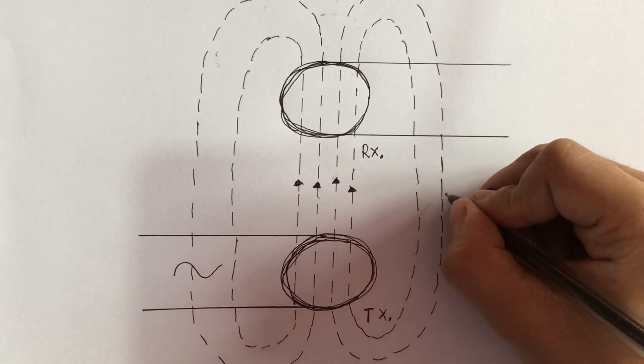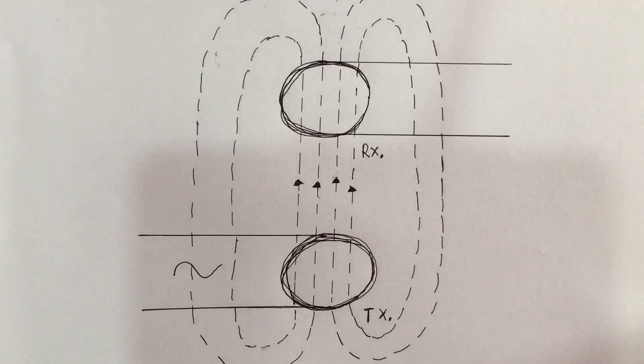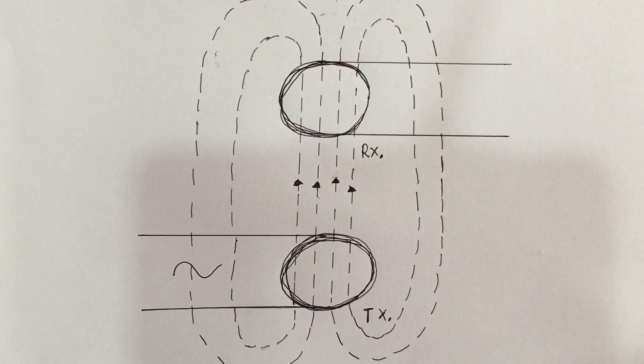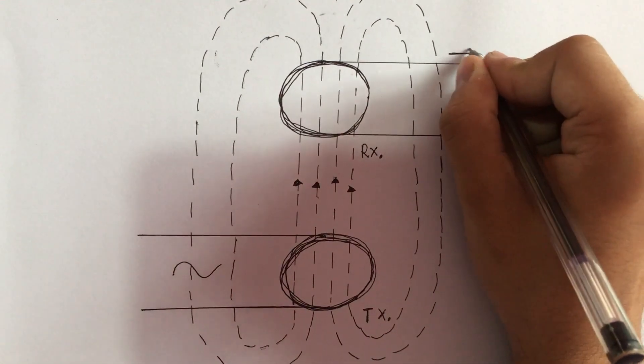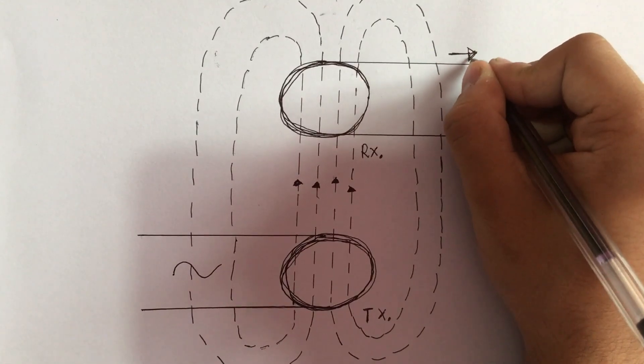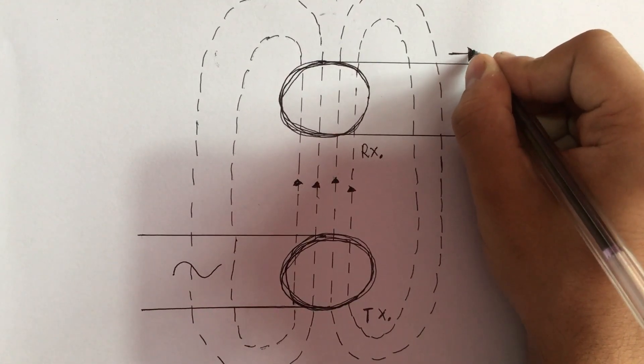The alternating current creates an alternating magnetic field around its coil. And when a changing magnetic field passes through a conductor perpendicularly, electricity is generated on the conductor. The same thing happens in our receiver coil, and hence electricity is transferred from our transmitter coil to our receiver coil.